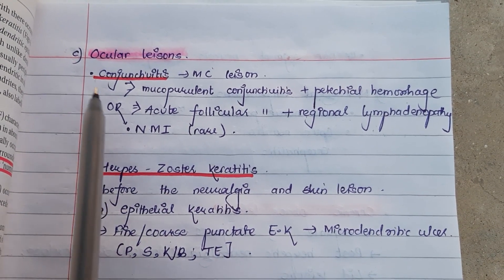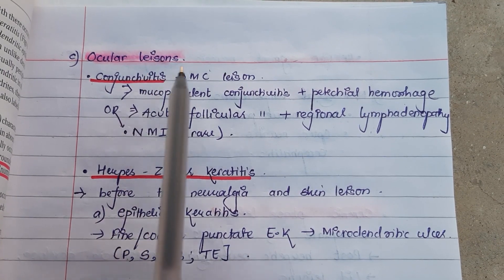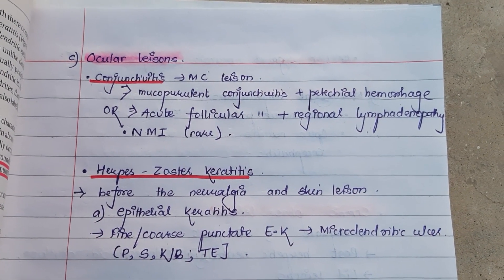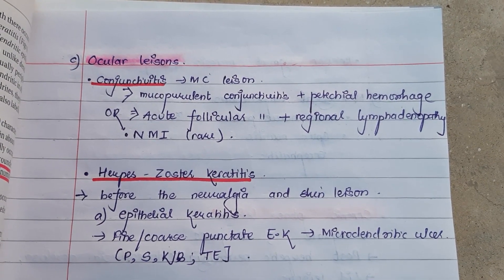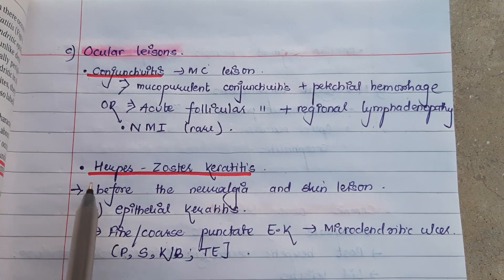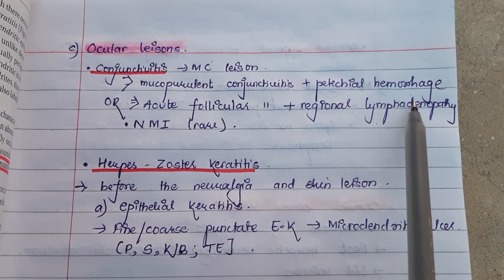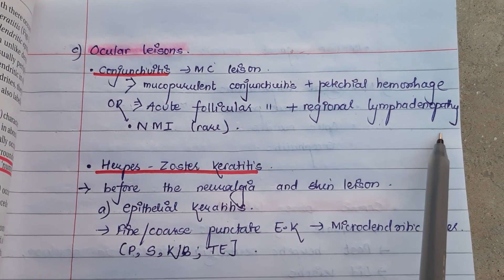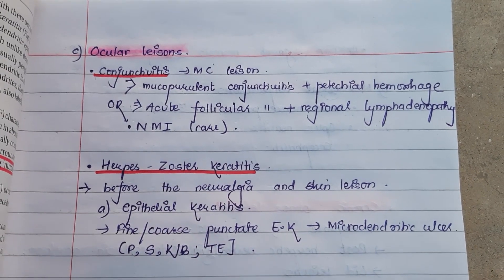Regarding ocular lesions, the conjunctiva is involved in the form of conjunctivitis, which is the most common ocular lesion. The conjunctiva is involved only after subsidence of the skin eruptions. The conjunctivitis is either mucopurulent type with petechial hemorrhage, or acute follicular type with regional lymphadenopathy. Rarely, there can be necrotizing membranous inflammation.